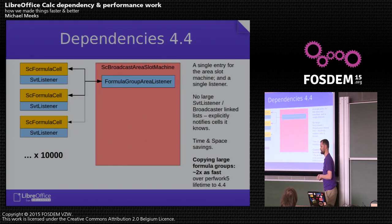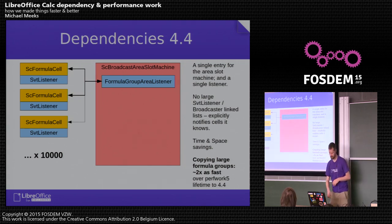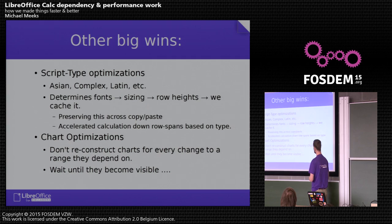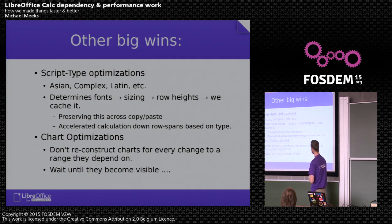So time and space savings: if you copy a large formula group you're manipulating stuff about twice as fast over what was there before. We had about a three-fold saving for copying and pasting large chunks of data overall in the six months. Another big part of that was script type optimization.